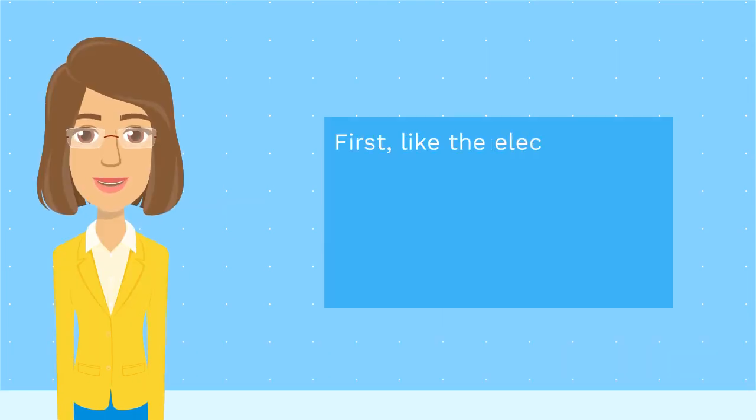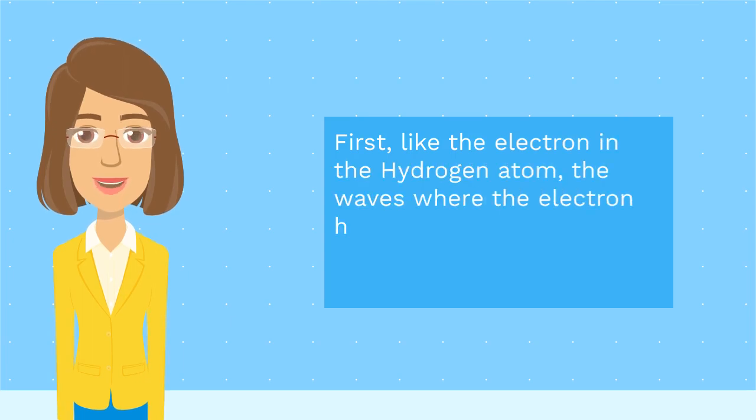First, like the electron in the hydrogen atom, the waves where the electron has total energy equal to Ea plus mc² are spatially localized.